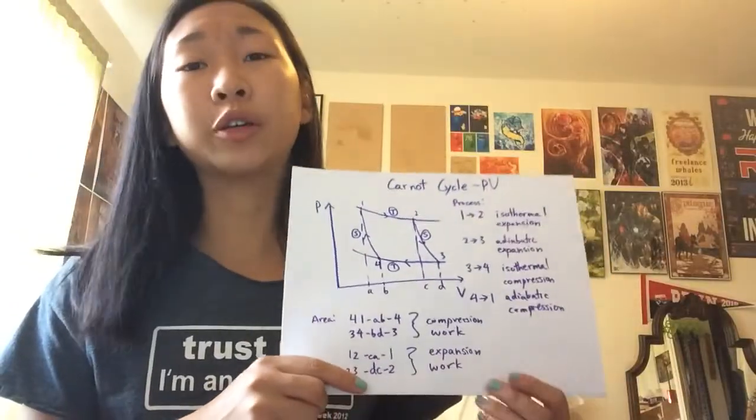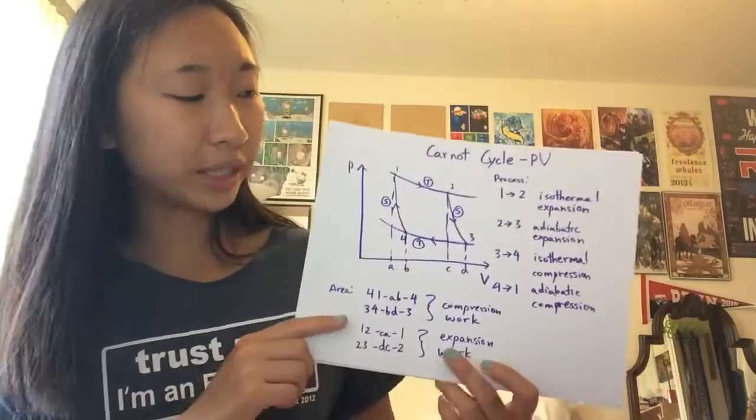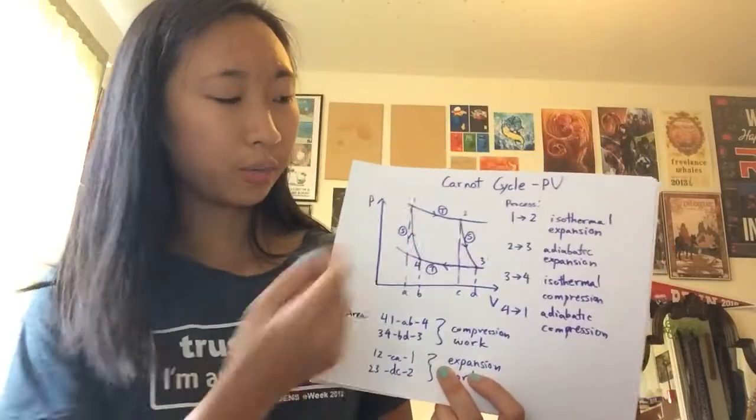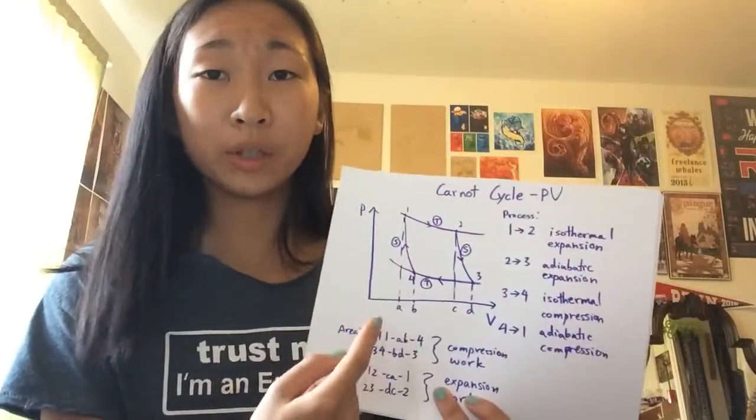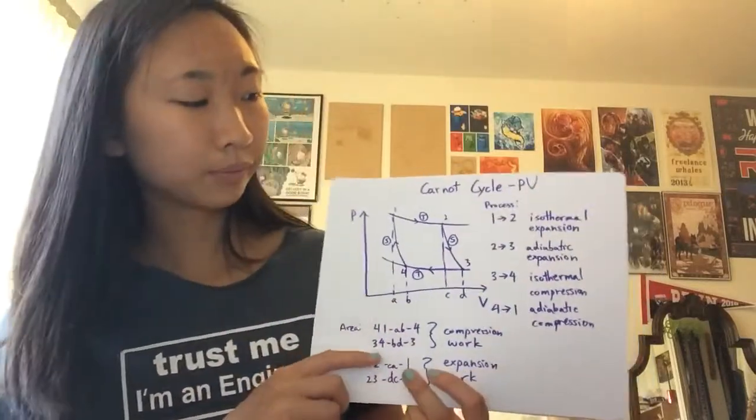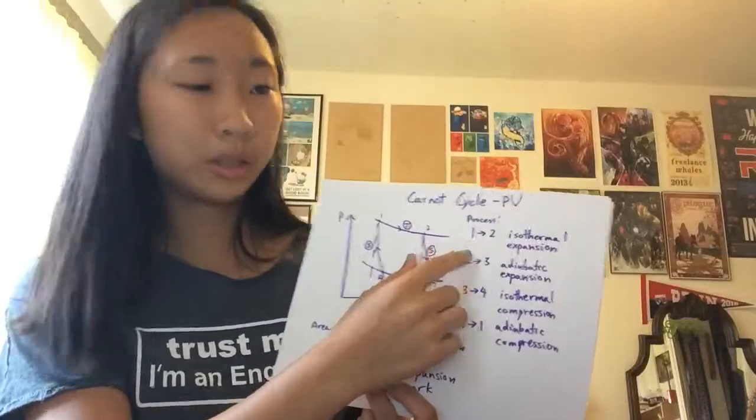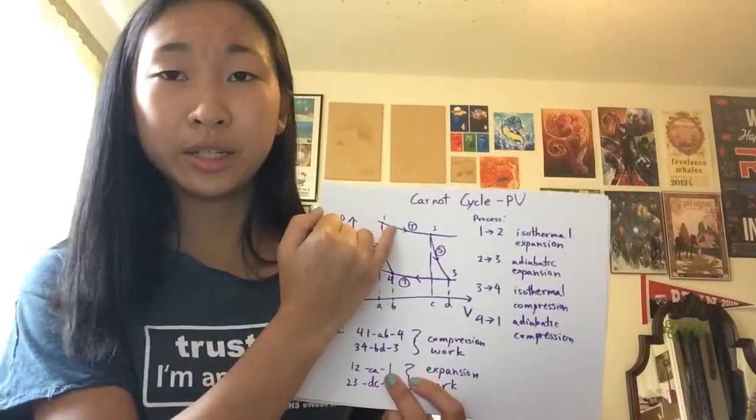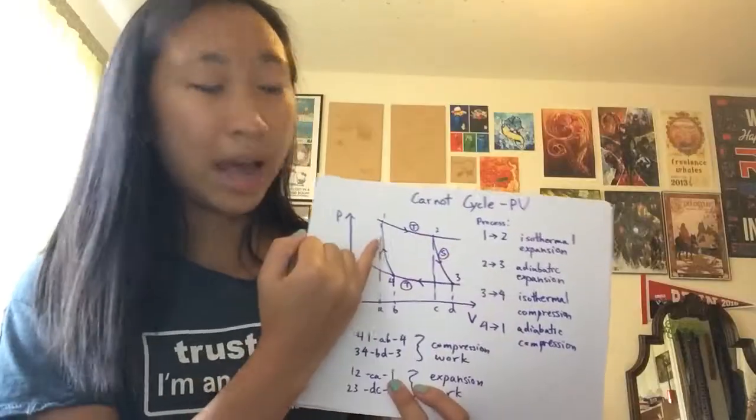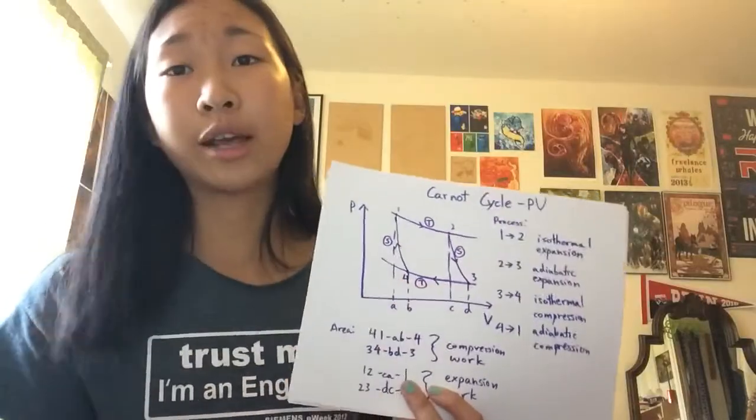The most common system would be the Carnot cycle. Seeing this on a PV diagram, you're going to see some curved lines, but now you'll know these two curves are isothermal lines, and the steeper inverse relationship would be the isentropic lines. From one to two, it's an isothermal expansion. You can tell that because you're on an isothermal line here, and increasing in volume, so going right on the diagram.